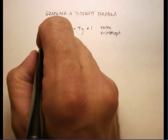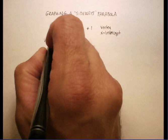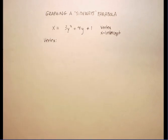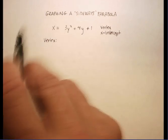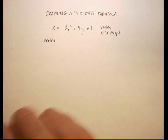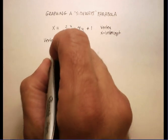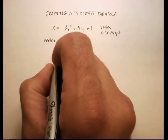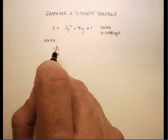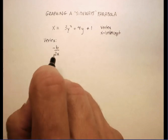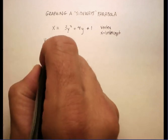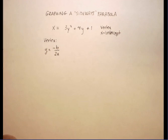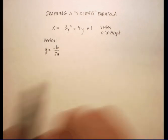What do we do? To find the vertex, we're going to use the formula that we had for the standard form with the regular parabola. We're going to use negative b over 2a, except instead of finding the x value, this is going to find our y value in the vertex.